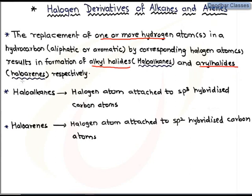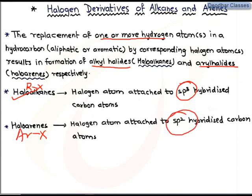When hydrogen from an aliphatic hydrocarbon is replaced we get haloalkanes, and when hydrogen from an aromatic hydrocarbon is replaced with halogen we get haloarenes. In haloalkanes, indicated by RX, the halogen X is attached to R, where R is an sp3 hybridized carbon. In haloarenes, ArX, the halogen X is attached directly to the aromatic nucleus — that is, to an sp2 hybridized carbon.